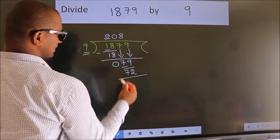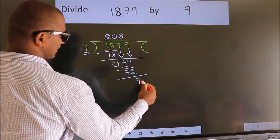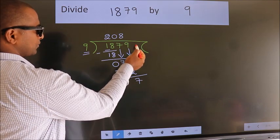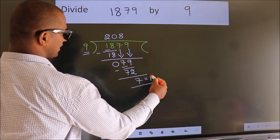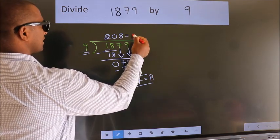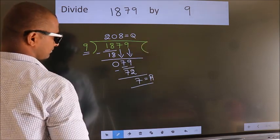Now we subtract, we get 7. No more numbers to bring down, so we stop here. This is our remainder, this is our quotient.